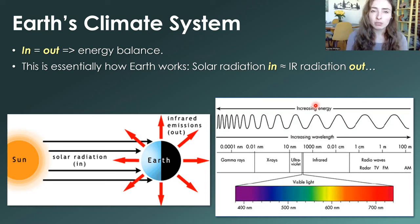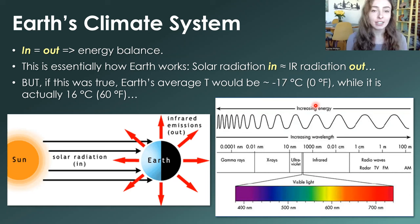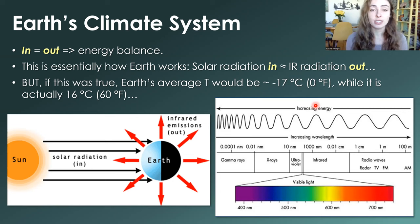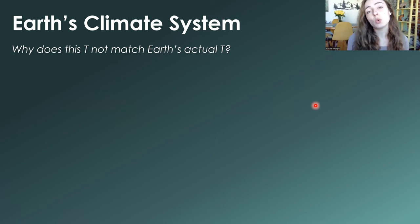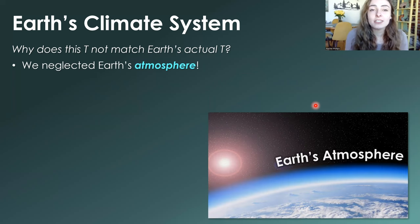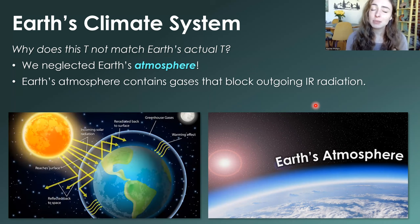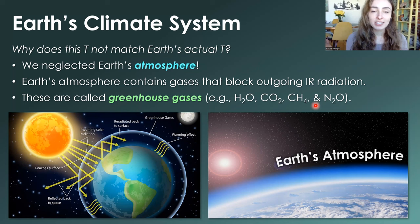So in equals out, right? Not necessarily. If this were the case, and the energy in equaled the energy out for Earth, Earth's average temperature would be about negative 17 degrees Celsius or 0 degrees Fahrenheit. But its actual average global temperature is about 16 degrees Celsius or 60 degrees Fahrenheit. Why is it warmer than what we calculate? Because this model neglects the existence of Earth's atmosphere. Earth's atmosphere contains gases that block outgoing IR radiation — these are called greenhouse gases.